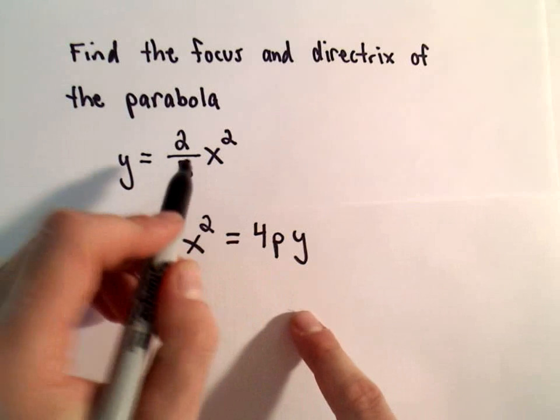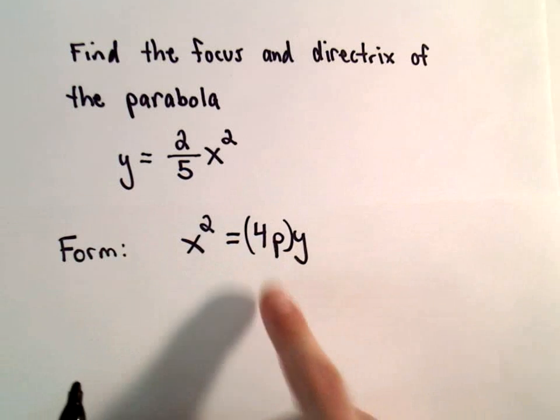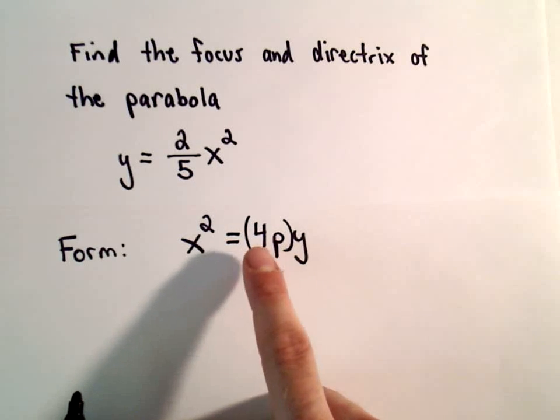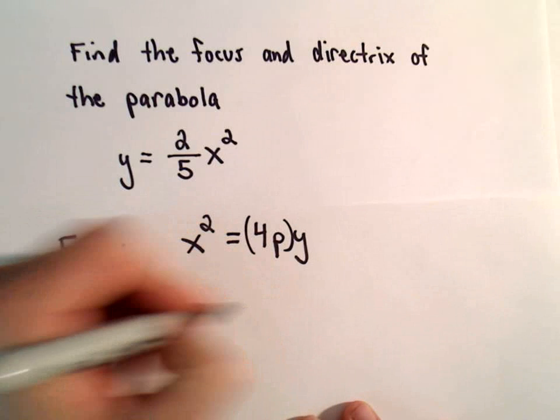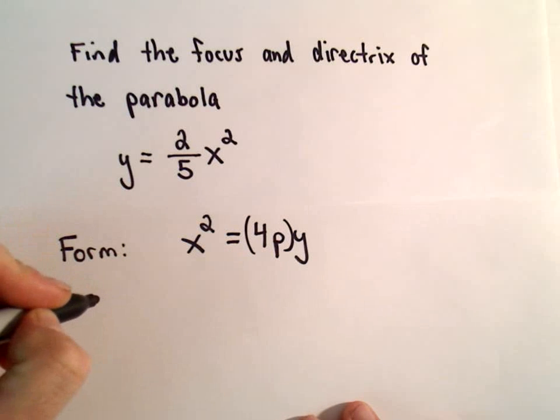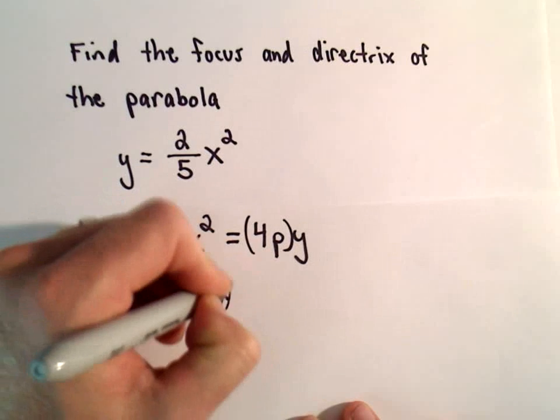And then whatever the coefficient is in front of y, we'll rewrite that so that when we take four times the number p, we get the same coefficient. And again, the point is, when we get our p-value,